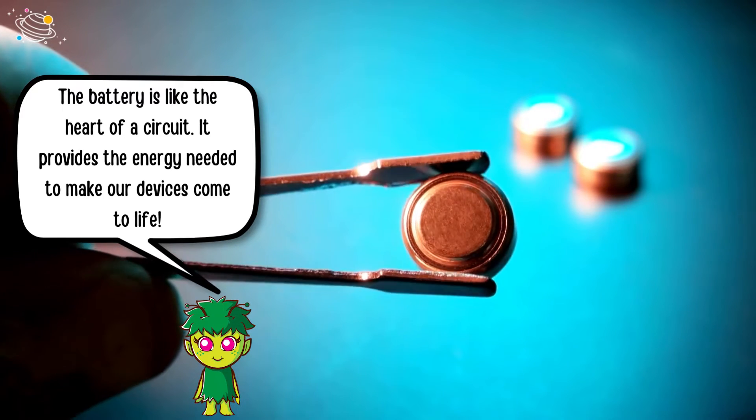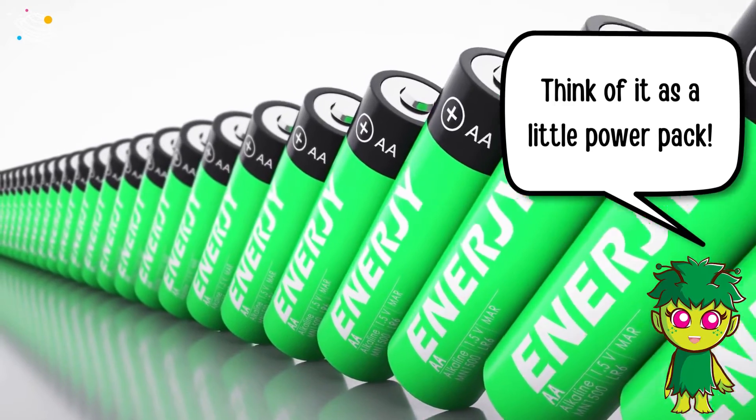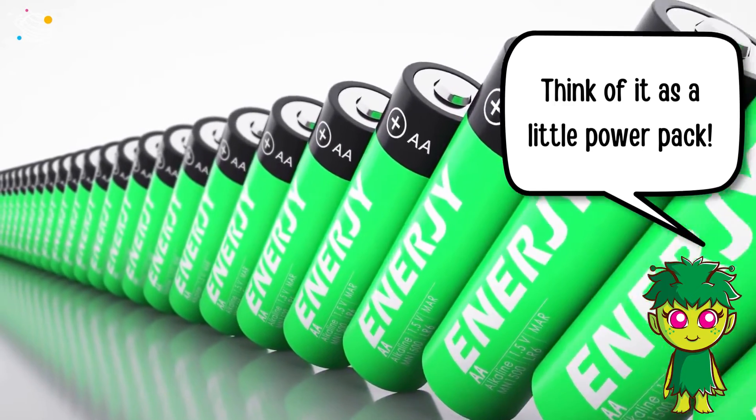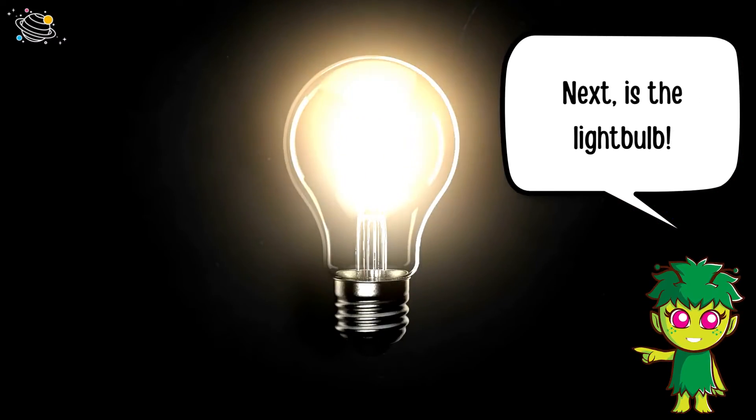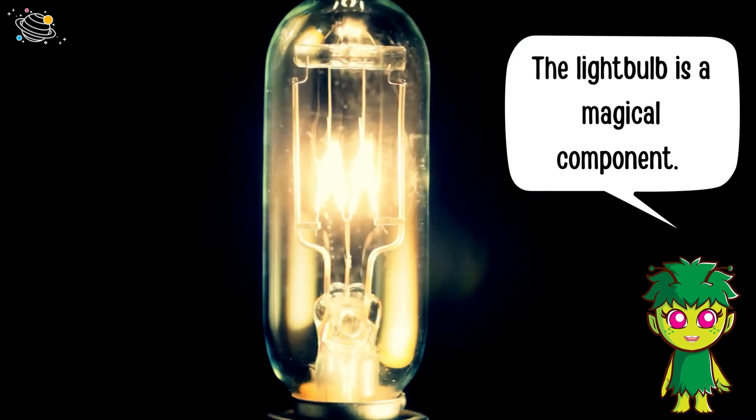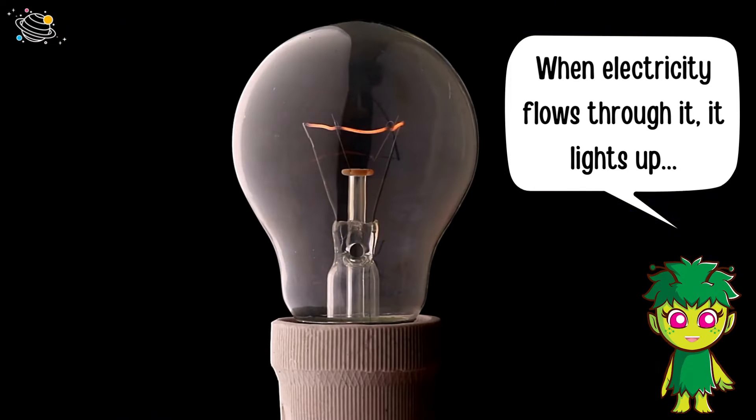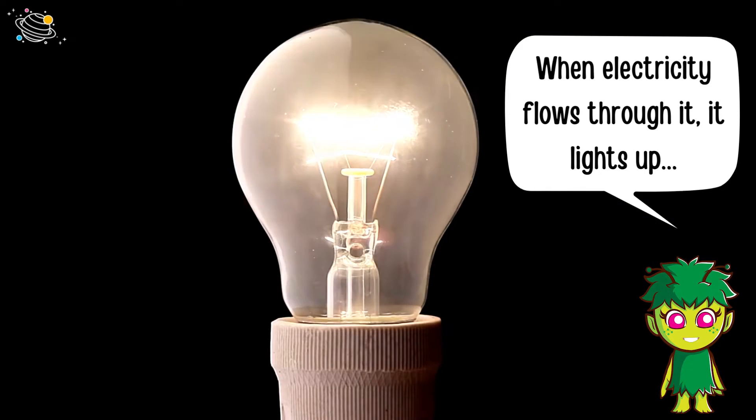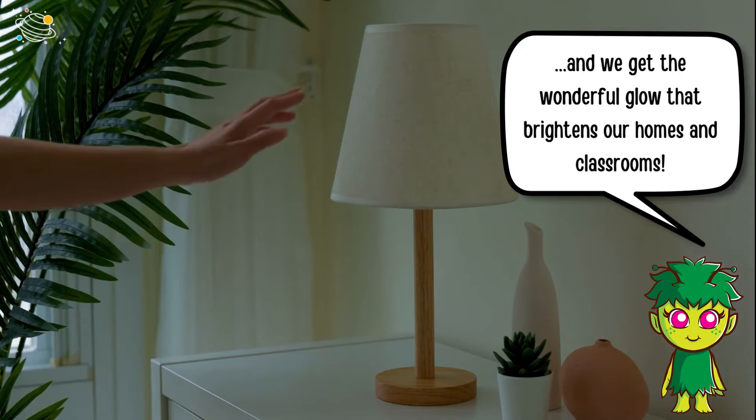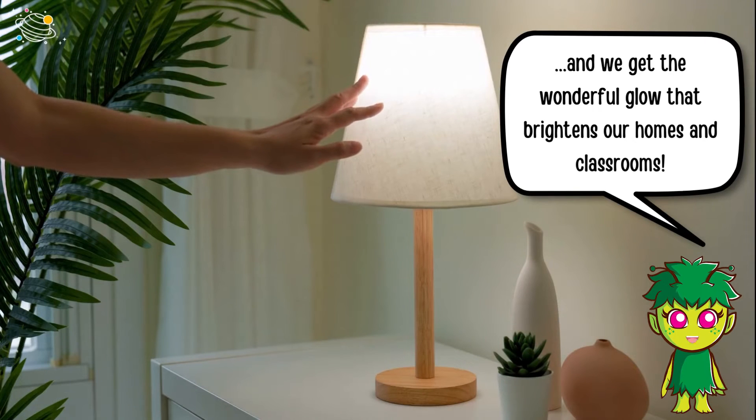Next is the light bulb. The light bulb is a magical component. When electricity flows through it, it lights up and we get the wonderful glow that brightens our homes and classrooms.